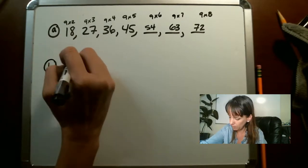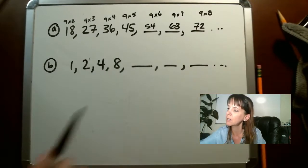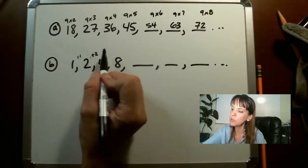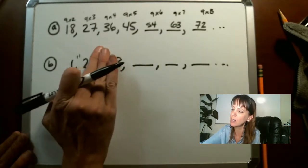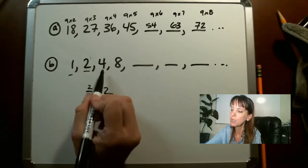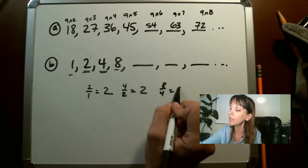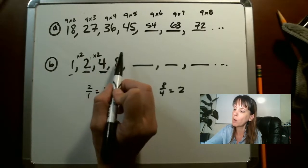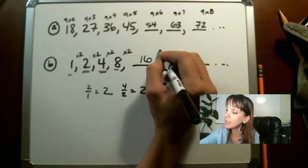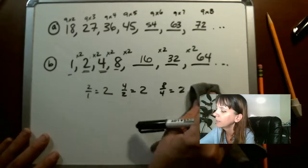For B, we've got one, two, four, eight. The differences are plus one, plus two, plus four — that doesn't give a clear pattern. So use the division trick: two divided by one equals two, four divided by two equals two, eight divided by four equals two. So we're multiplying by two each time: one times two is two, two times two is four, four times two is eight — continuing: times two is sixteen, times two is thirty-two, times two is sixty-four.